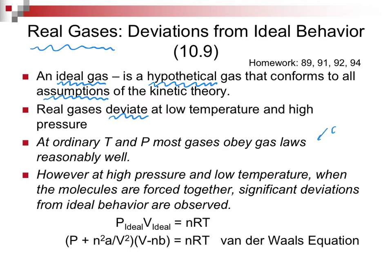But for chemistry 1210, for the most part, they're going to obey the gas laws reasonably well. But when we get to these conditions of a high pressure or a low temperature, molecules are going to be forced together, and that's where we're going to see deviations. So there is a correction factor for pressure and a correction factor for volume, and that is called the Van der Waals equation.